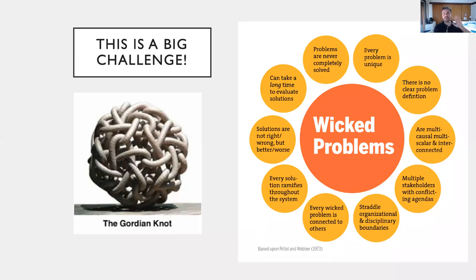This is an incredibly big challenge being faced by all areas of science. It's what's called a wicked problem. Problems of data reuse, data availability, and analysis really fall into this general category of intractable challenges — there's no clear problem definition, they're multi-causal, multi-scalar, and interconnected. There are many stakeholders with conflicting agendas. Solutions are not right or wrong but better and worse, and problems are never completely solved. This is very much a Gordian knot situation familiar to people who have been talking about open data and open science for a long time.